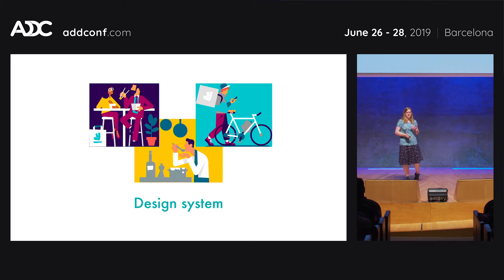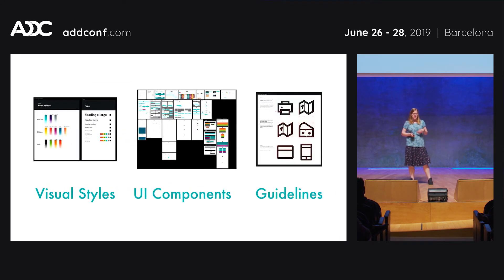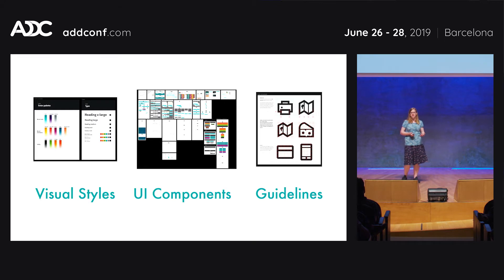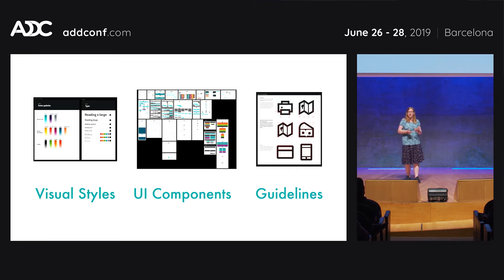We decided to tackle this problem by using a design system. Essentially, you have a set of visual styles, UI components, and guidelines used to build applications. These components come with constraints and rules — for example, a button can only have three types: primary, secondary, and tertiary. Or a specific text style can only be used for headings. All these constraints help with consistency by giving people something to work with. You don't have a blank canvas; you have rules.